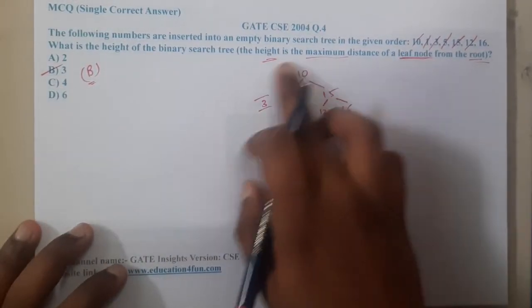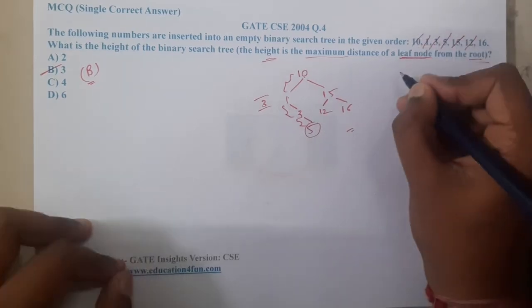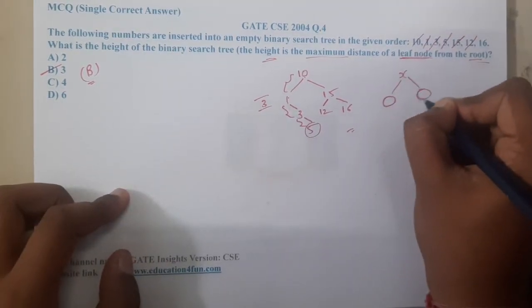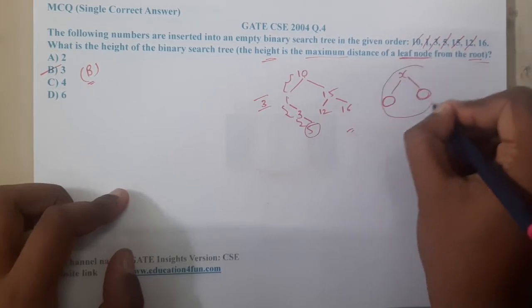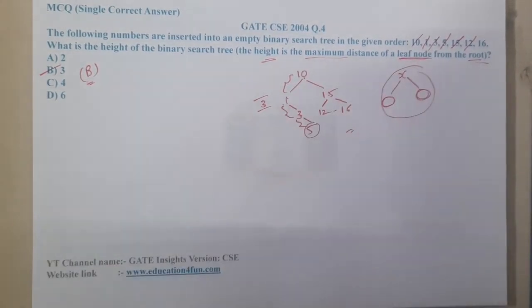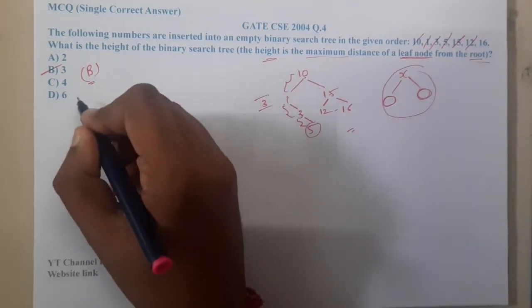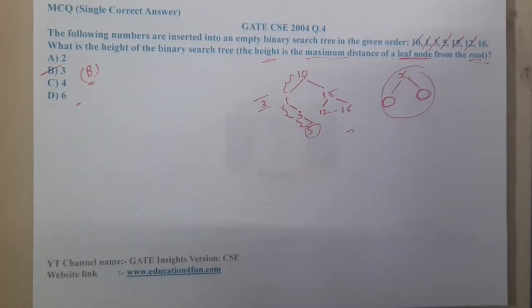This property is applied at each and every node. That's it. That's the concept of binary search tree. The answer will be 3, the height of the tree will be 3.